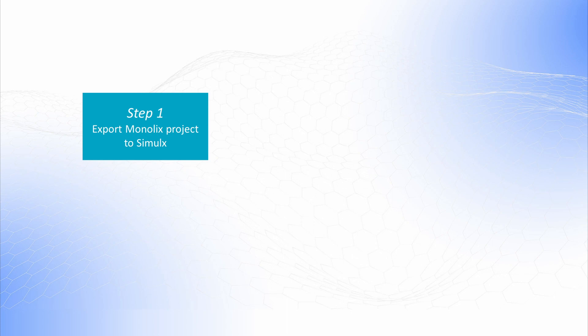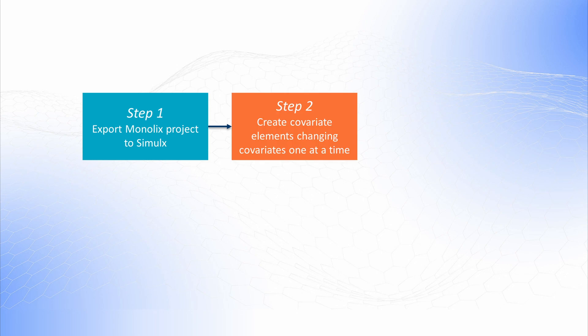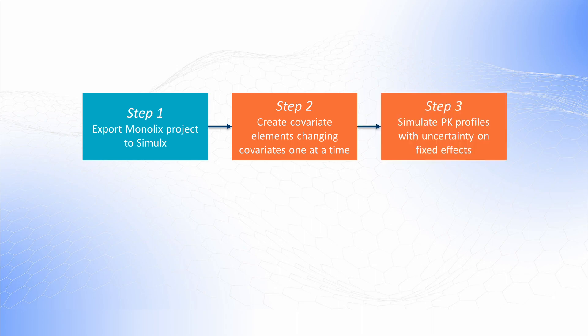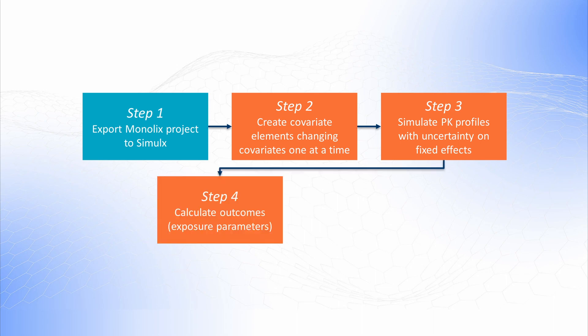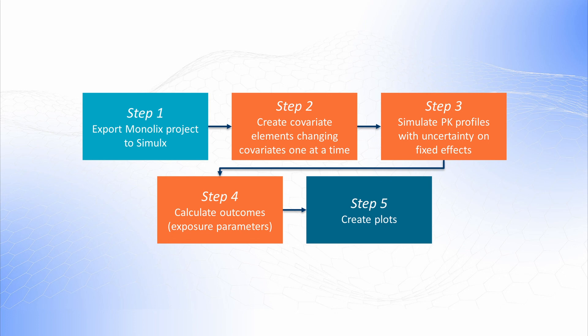First, we will export a Monolix project to Simulix. Second, create covariate elements — one for the reference and others by changing values of one covariate at a time. Next, set up and run a simulation. In the outcomes and endpoints, post-process the simulation results to calculate exposure parameters Cmax and AUC as outcomes. And finally, we will switch from the graphical user interface to R to generate the plots.